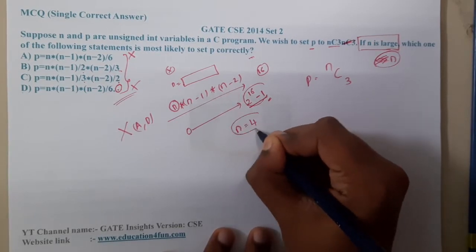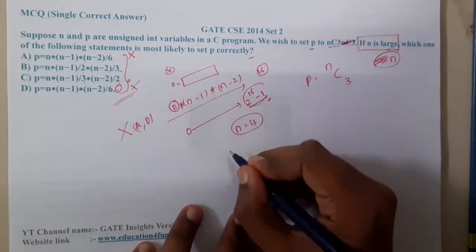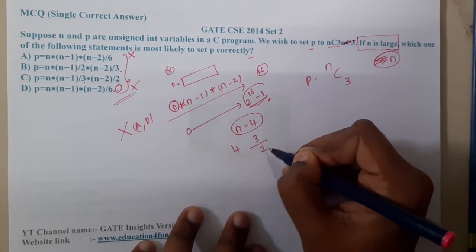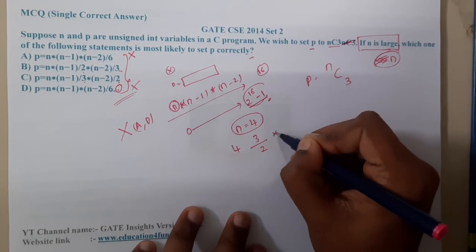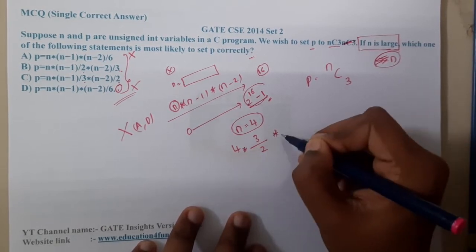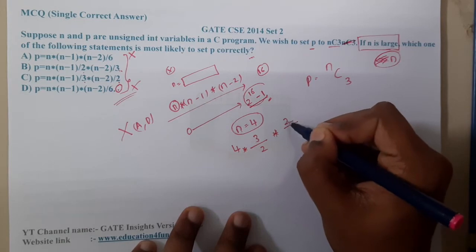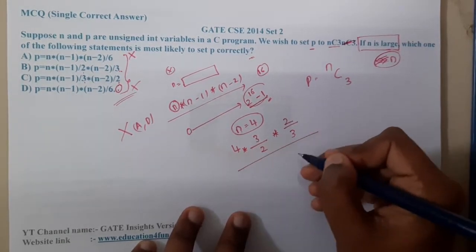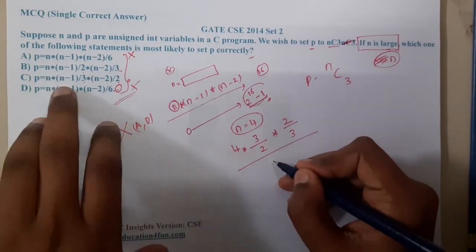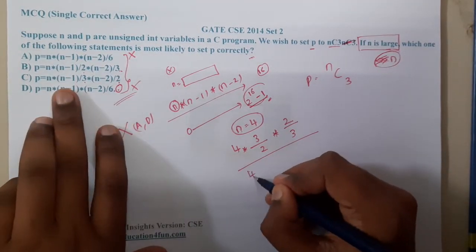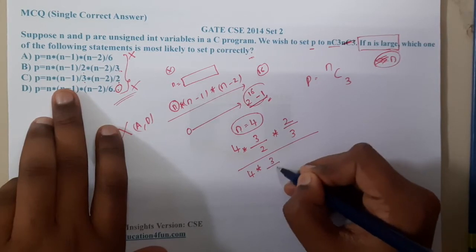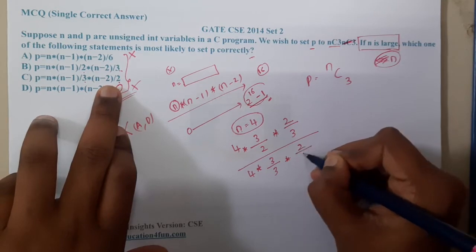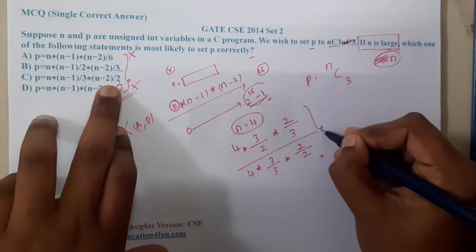If you take option B, the value will be n, that is 4, into 3 by 2, into 2 by 3. In the next option, that is C, n is 4 into 3 by 3 into 2 by 2.